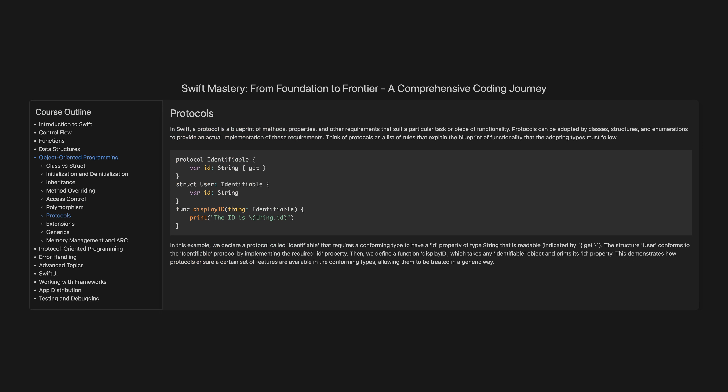Protocols. In Swift, a protocol is a blueprint of methods, properties and other requirements that suit a particular task or piece of functionality. Protocols can be adopted by classes, structures and enumerations to provide an actual implementation of these requirements. Think of protocols as a list of rules explaining the blueprint of functionality that the adopting types must follow. In this example, we declare a protocol called Identifiable that requires a conforming type to have an id property of type String that is readable, indicated by get. The structure User conforms to the Identifiable protocol by implementing the required id property. We then define a function displayID, which takes any identifiable object and prints its id property, demonstrating how protocols allow conforming types to be treated in a generic way.